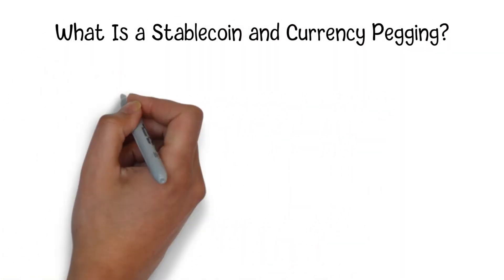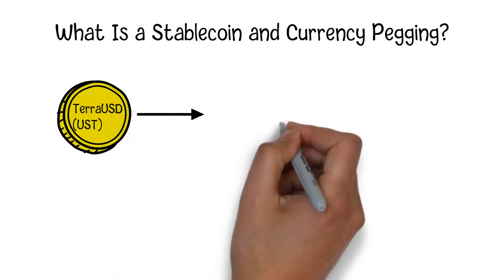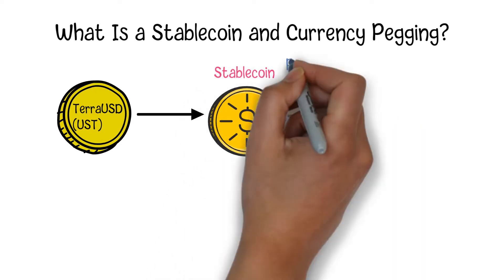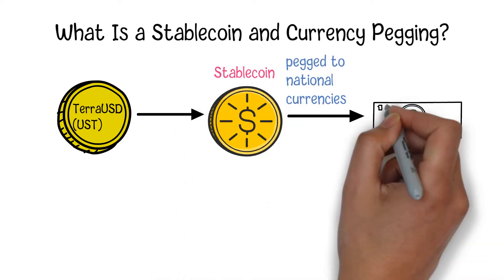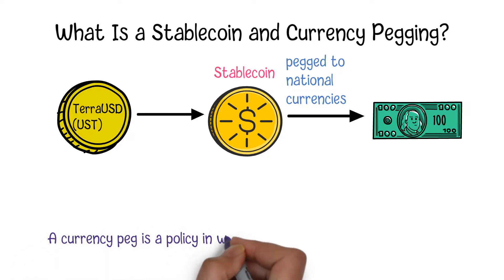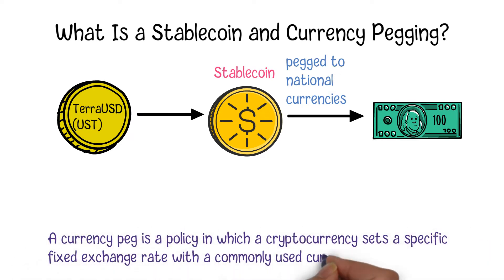TerraUSD, abbreviated as UST, is a stablecoin — a type of cryptocurrency designed to maintain a steady value peg to US dollars. A currency peg is a policy in which a cryptocurrency sets a specific fixed exchange rate with a commonly used currency such as US dollars. A good currency peg can help reduce uncertainty and make the currency more trustworthy.